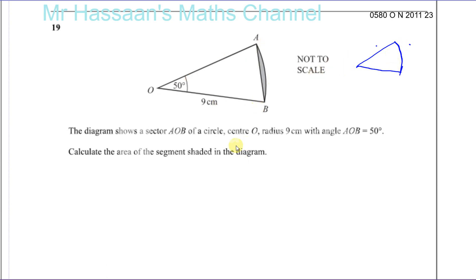The sector of a circle, center O, radius 9 centimeters. The angle AOB is 50 degrees. Let me move that over here. This is O, this is A, this is B. This is 50 degrees, this is a sector, 9 centimeters.